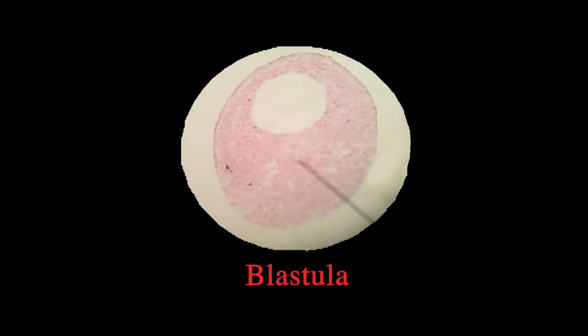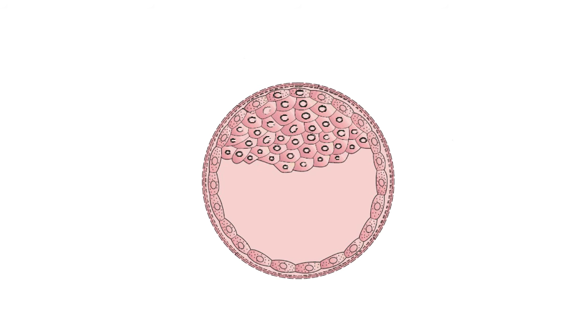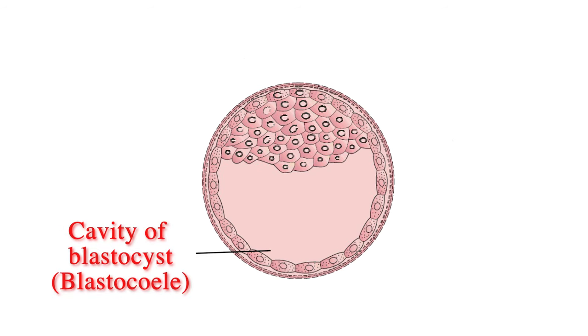Under the microscope, we observe that in transverse section the blastocyst appears as a circular structure. It has a cavity within it which is called the blastocoel. Zona pellucida degenerates in the blastocyst.